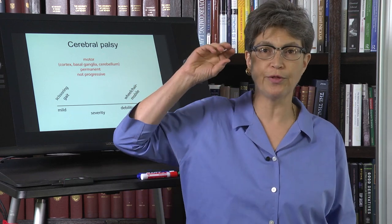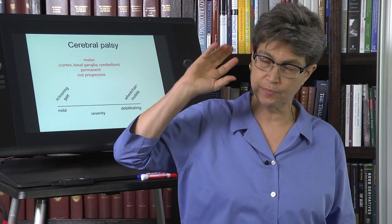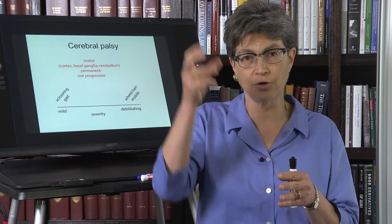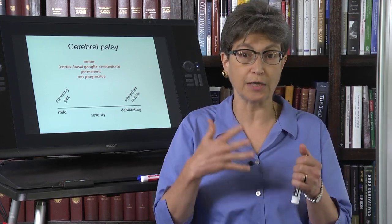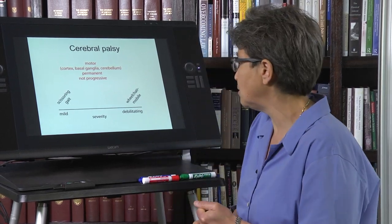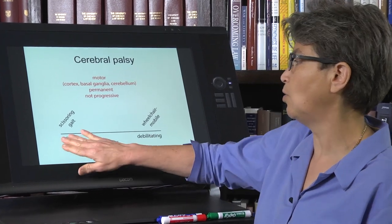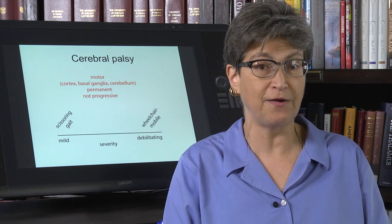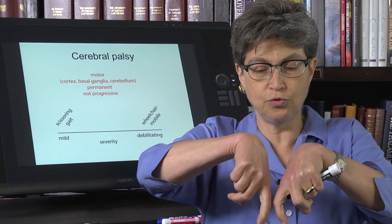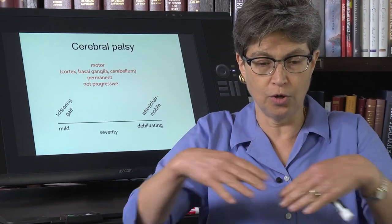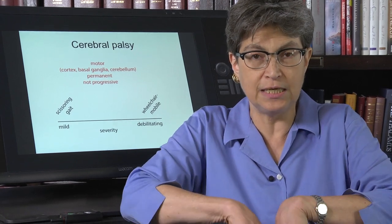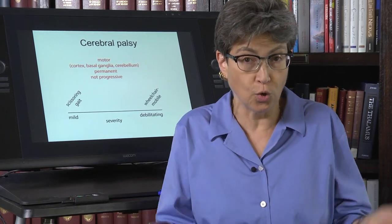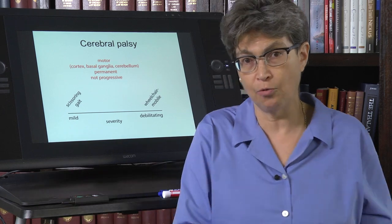Spastic cerebral palsy can occur with an anoxia — a lack of oxygen to the motor cortex — but oftentimes it's damage to deep white matter containing corticospinal tract or corticobulbar tract fibers. The severity can range from extremely mild to debilitating. A mild case presents as a scissor gait, where the legs are adducted so that the knees touch together. The scissor gait works; it just looks a little different from how most people walk.